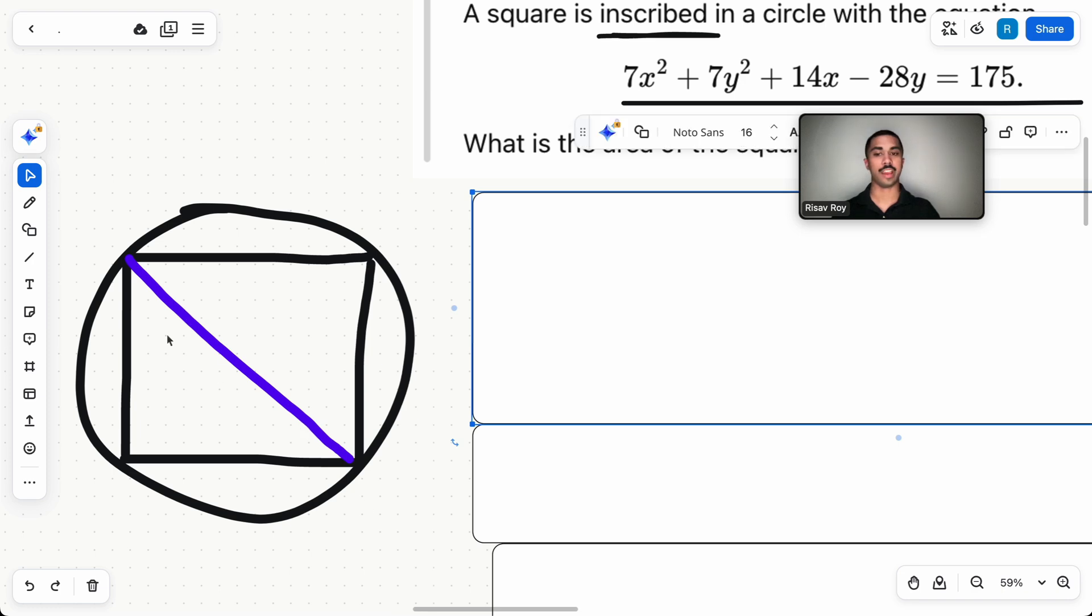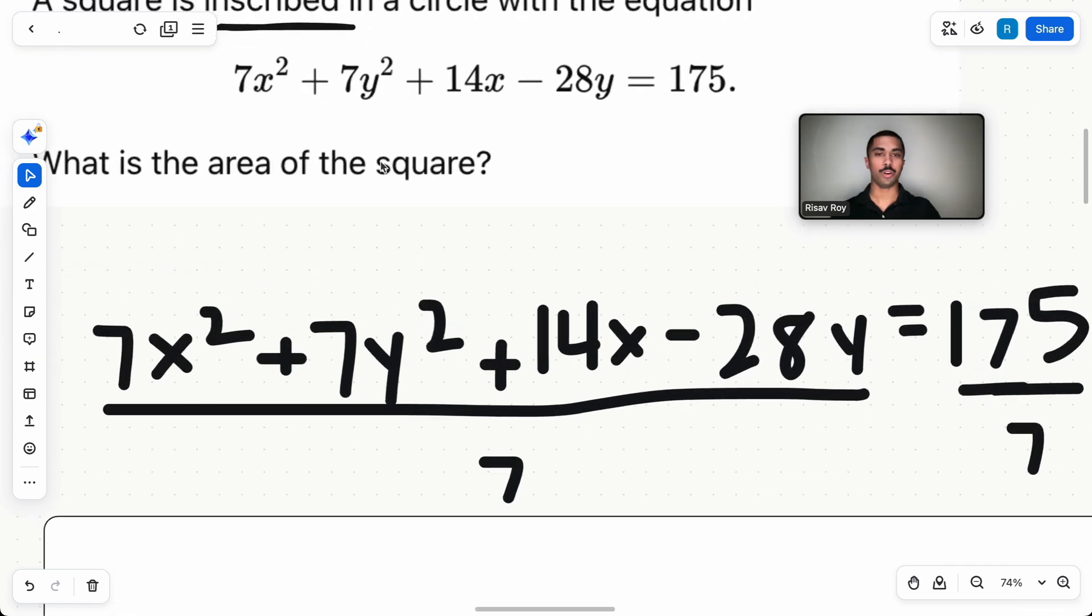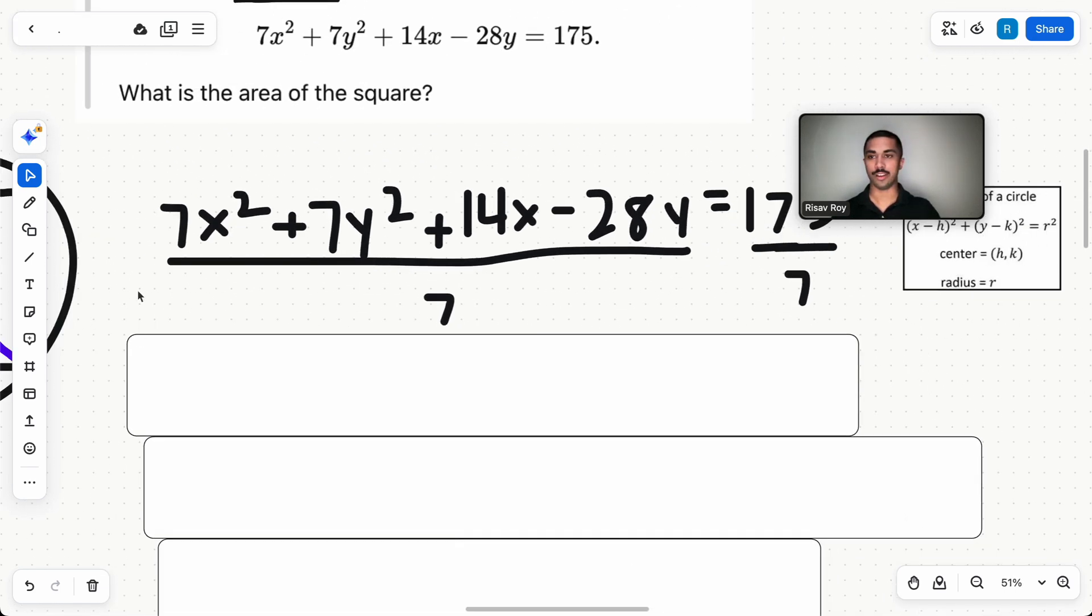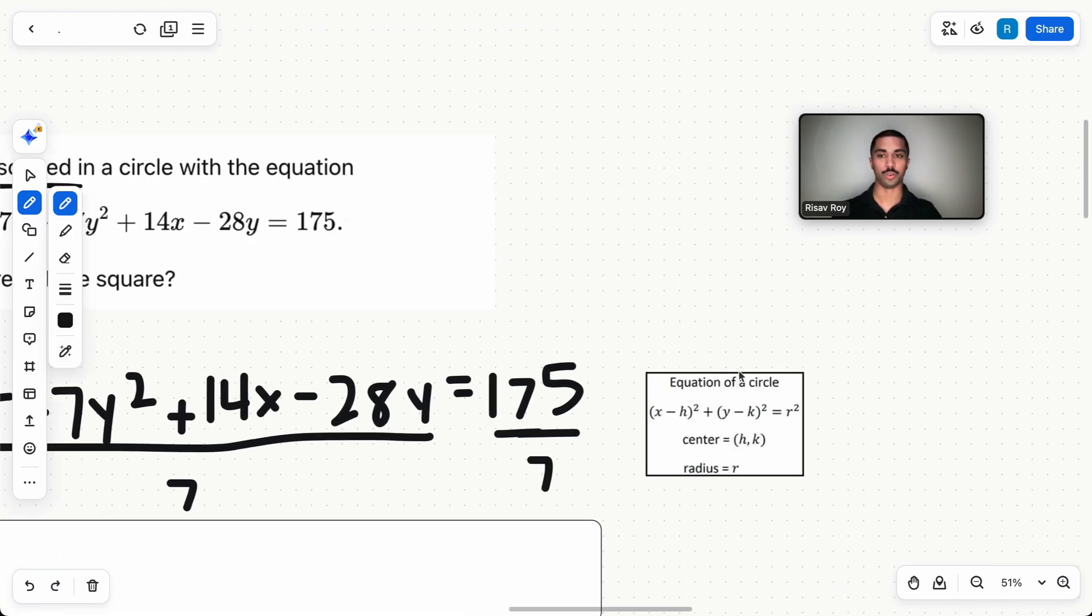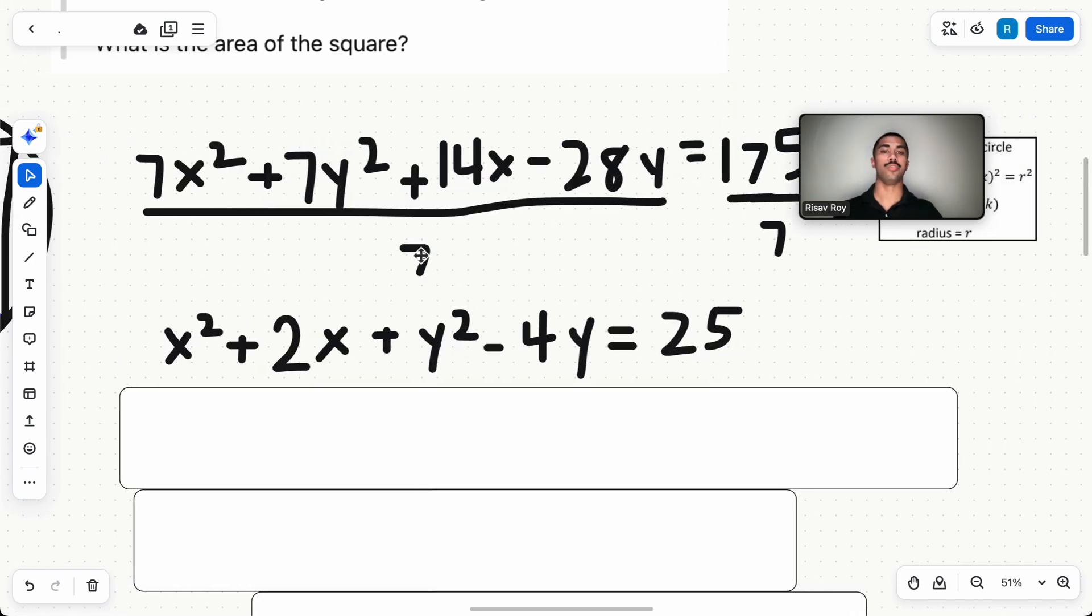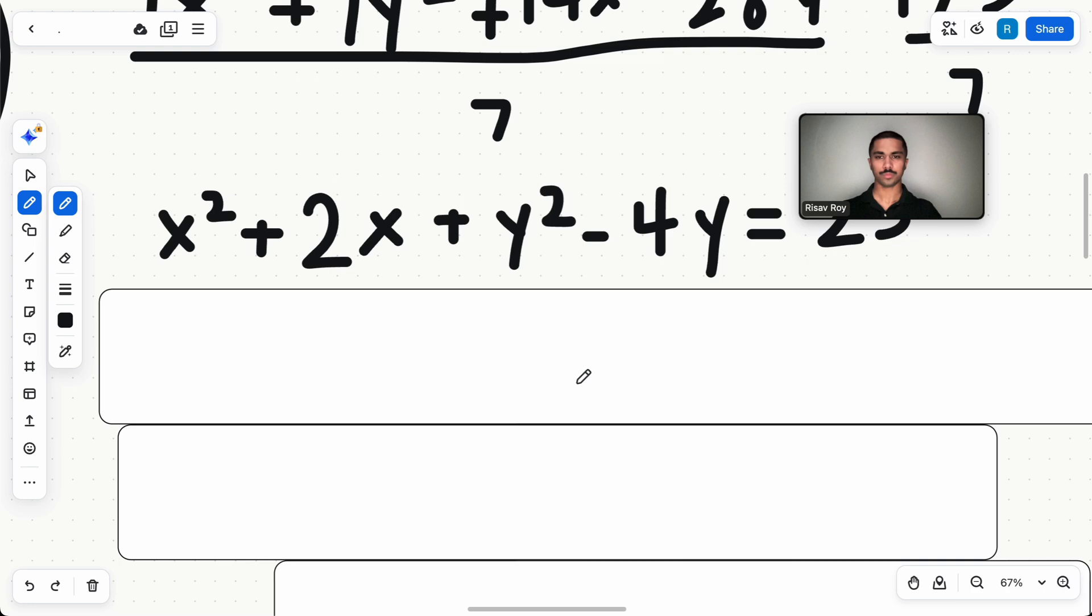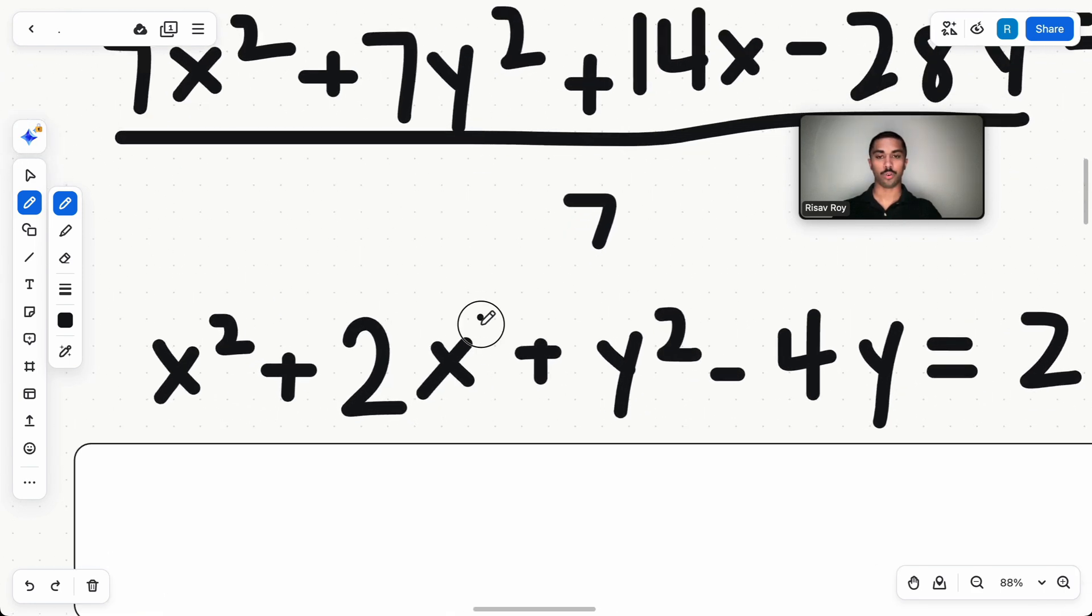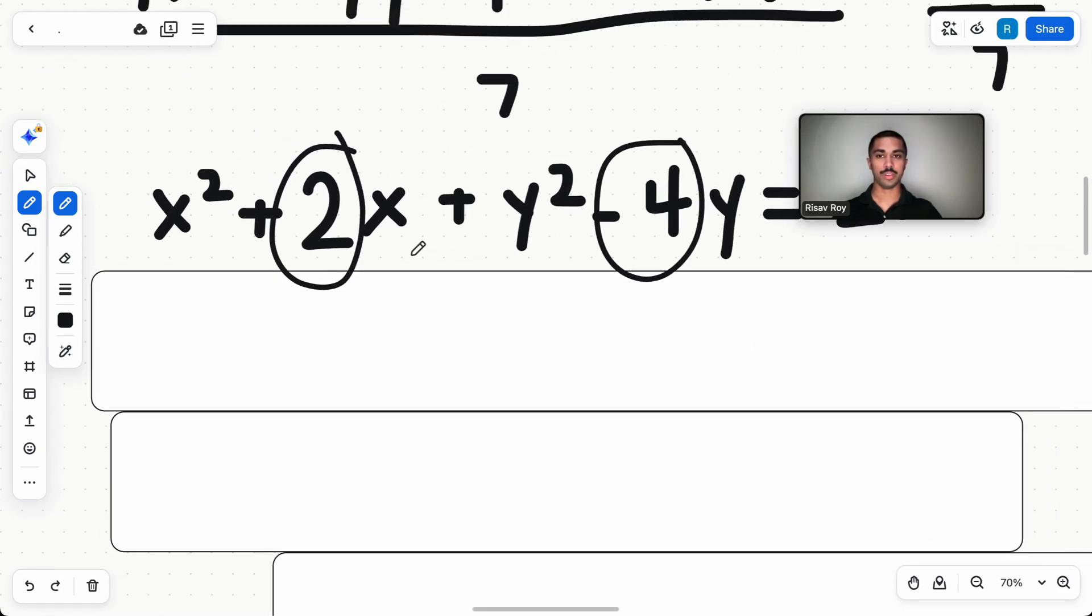The first thing is we need to solve for this diagonal. How do we do that? Well, we need to complete the square. Maybe you've heard of that term. Maybe you haven't. But all that means is that we need to change this right here into a form like the equation of a circle. So the first thing we would need to do, we need to divide out the sevens. We cannot have any coefficients other than one in front of these x² and y² terms. So we divide them out.